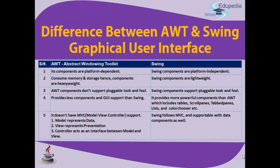To distinguish between AWT and Swing: the table shows the differences. First, AWT components are platform dependent, while Swing components are platform independent. Second, AWT consumes memory and storage, so its components are heavyweight. Swing components, on the other hand, are lightweight.